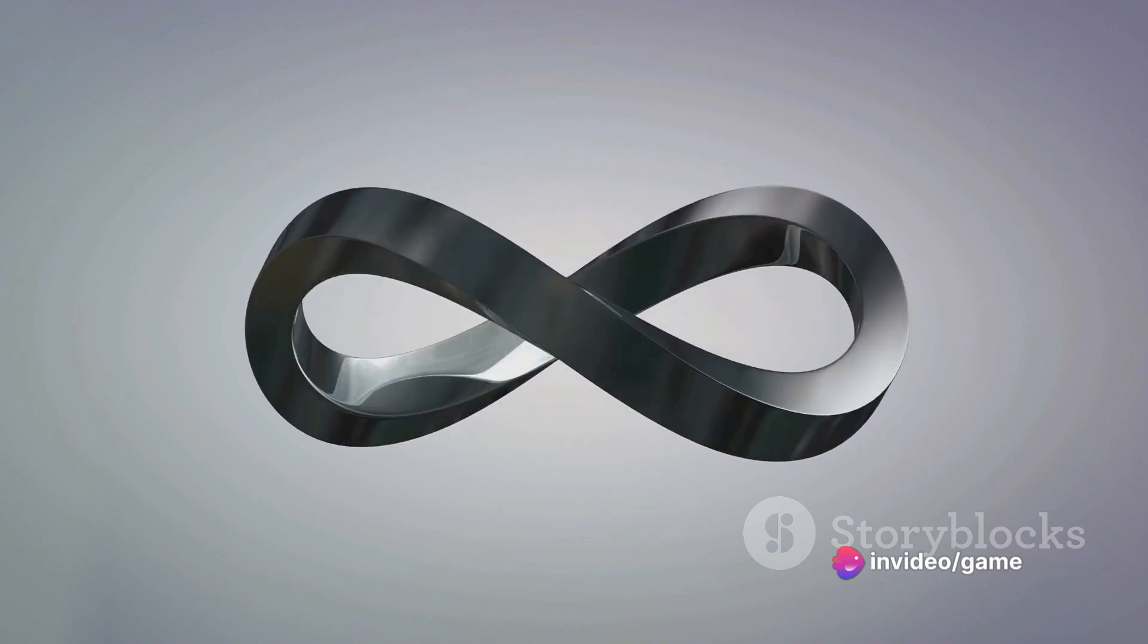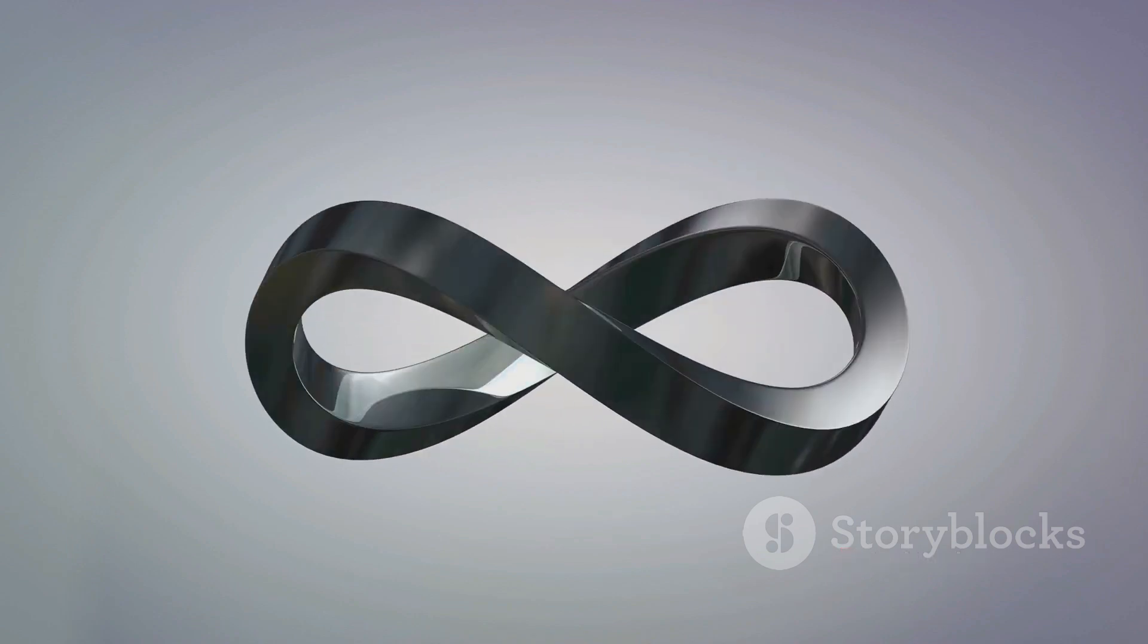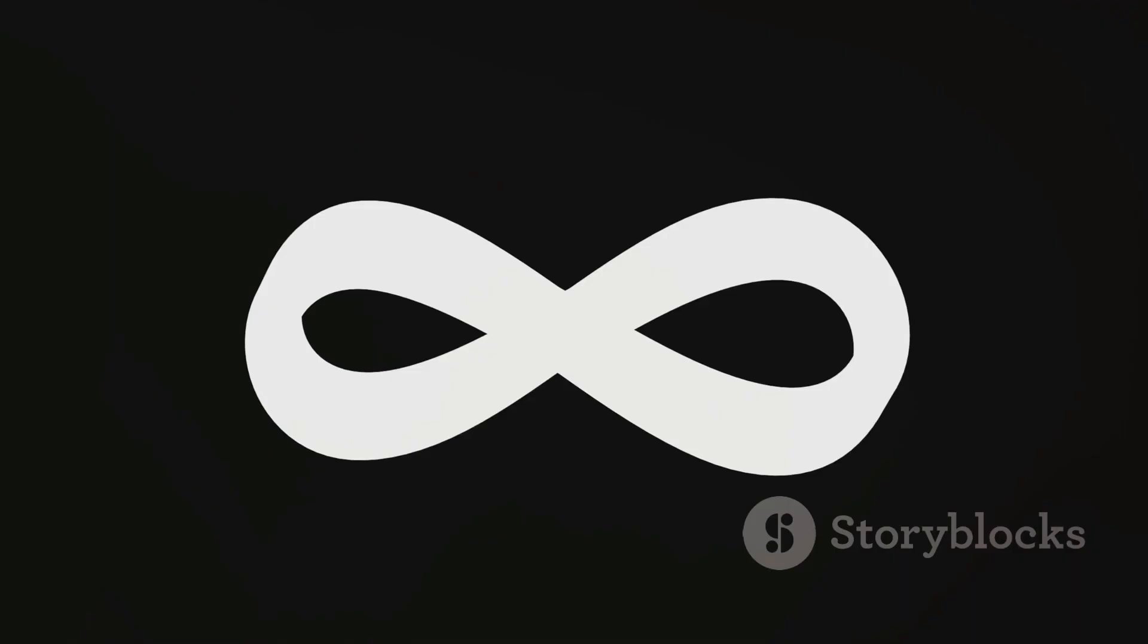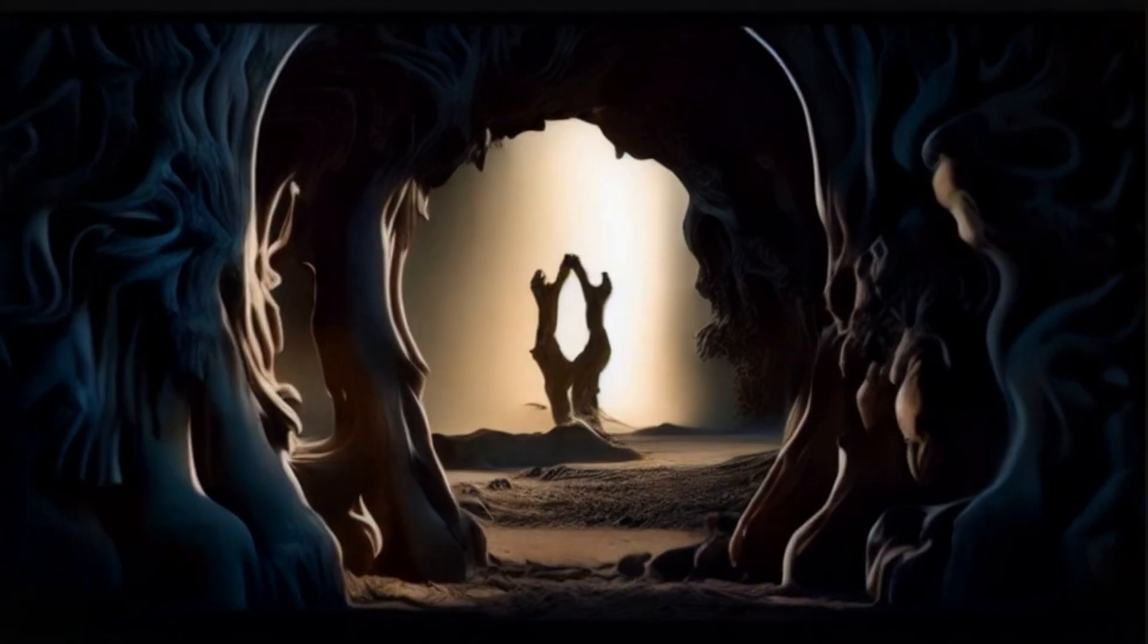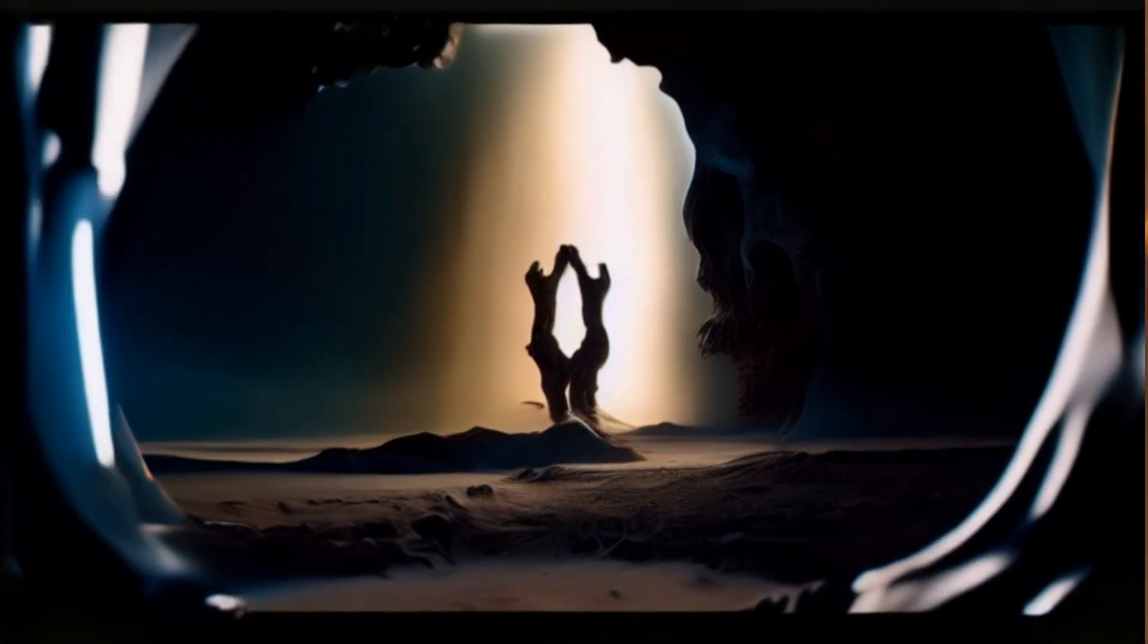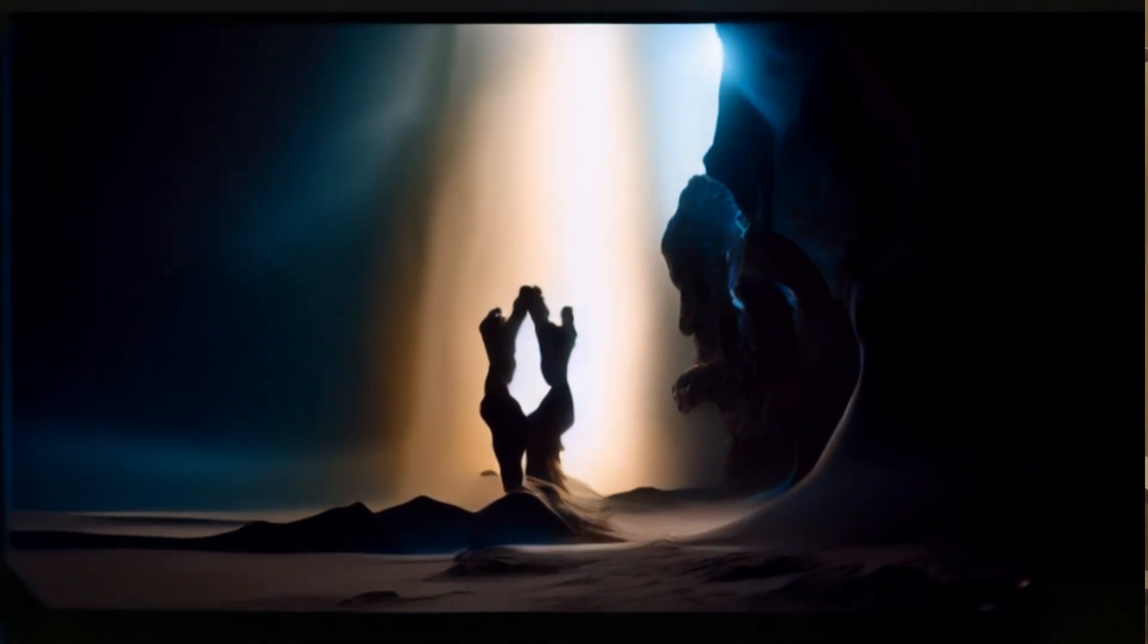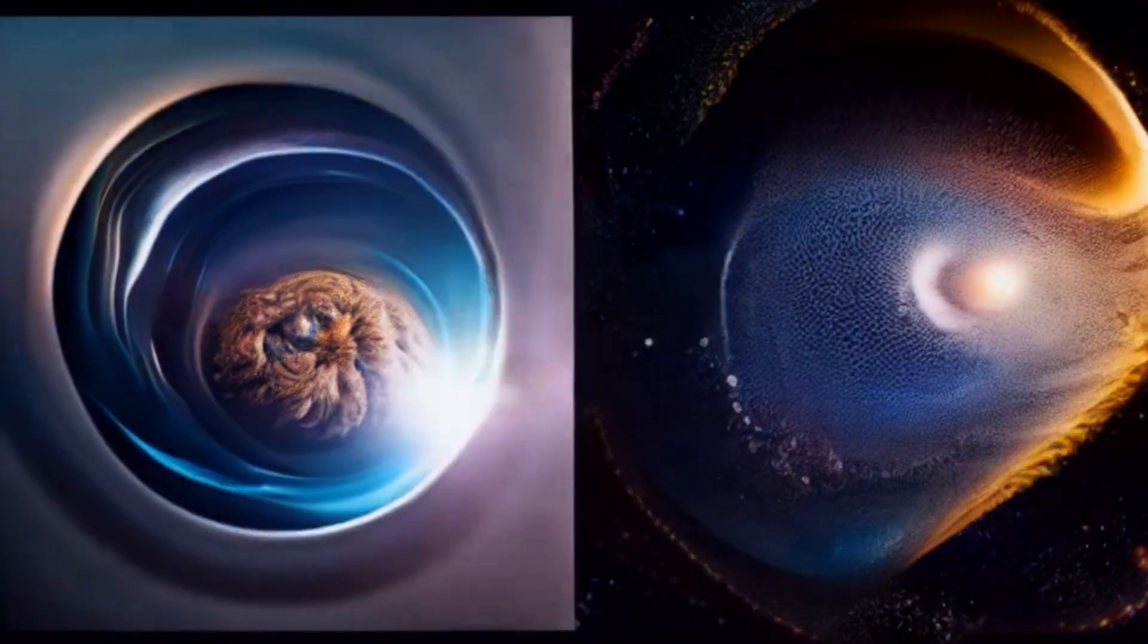Imagine this: a cycle where nothingness itself is immutable, constantly returning to its original state. But here's the twist: if nothingness can remain unchanged in annihilation, why can't existence? In this grand scheme, both being and non-being could exist in a state of perpetual annihilation and non-annihilation.